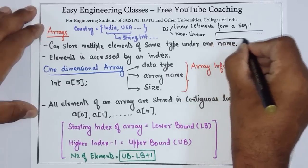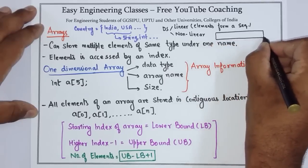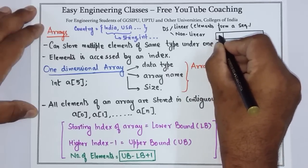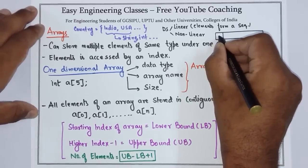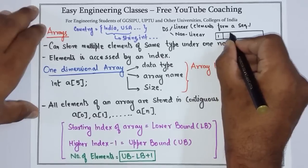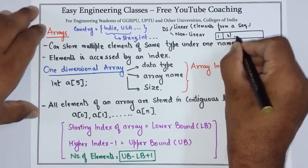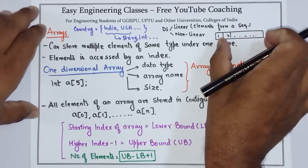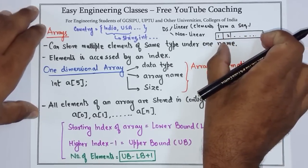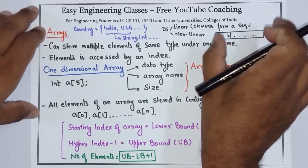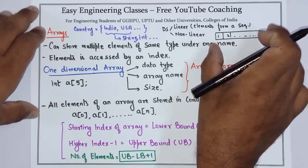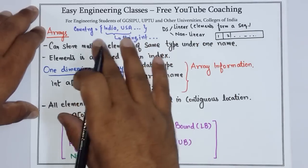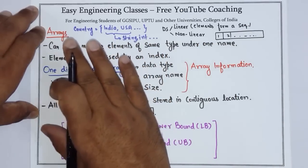An array is represented like this: suppose this is memory block one, this is memory block two, and so on. So a sequence of memory locations are used to store the elements. This is called an array.